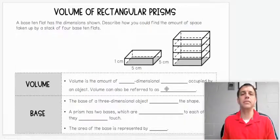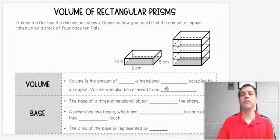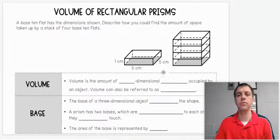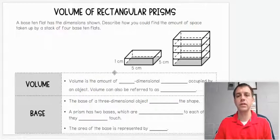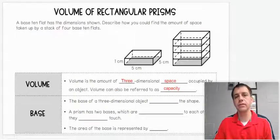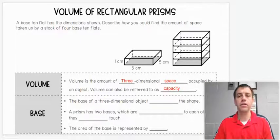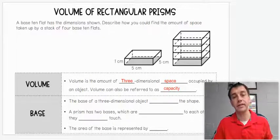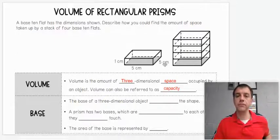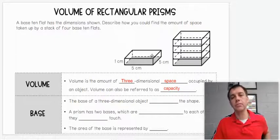The question here is, how could you find the amount of space taken up by a stack of four of these? Let's go ahead and talk about that today. Volume is the amount of three-dimensional space occupied by an object. Volume can also be referred to as capacity.